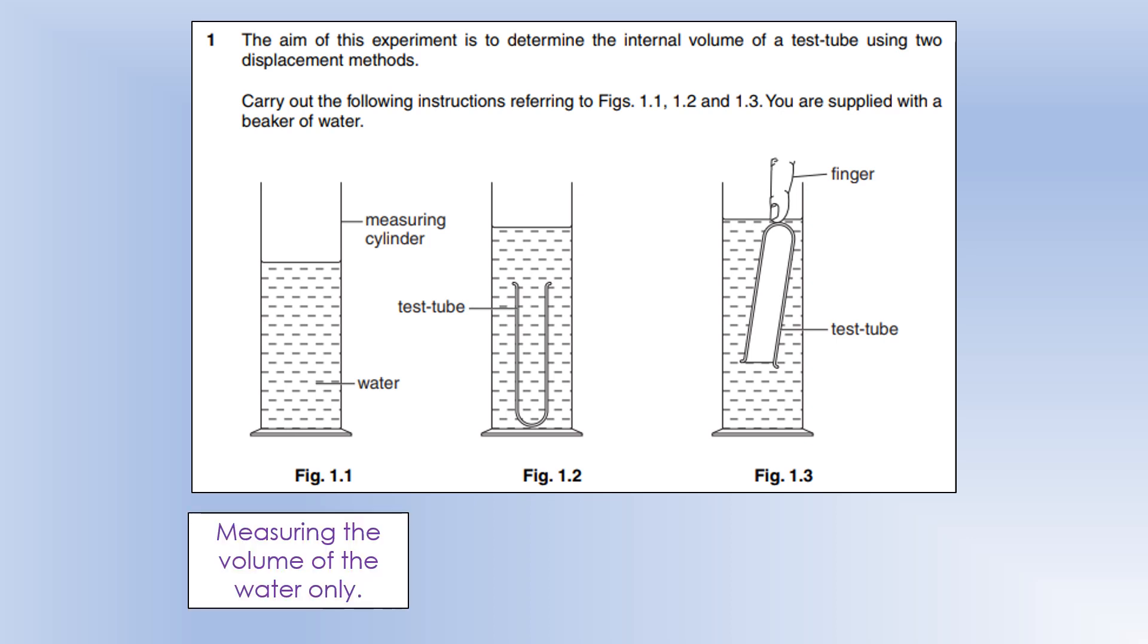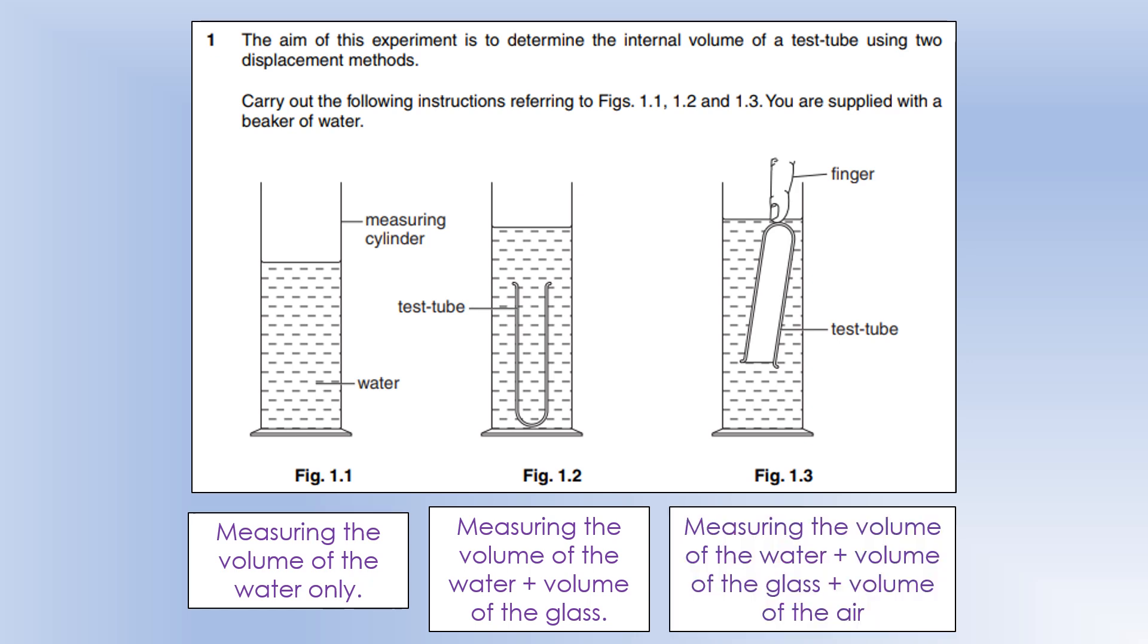The first scenario with just the measuring cylinder is going to measure the volume of water. The second one is going to measure the volume of water and the volume of the glass, and the third scenario is going to measure the volume of the water, the volume of the glass, and the volume of air inside the test tube. So that would be the one we expect to get the biggest volume.